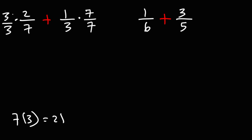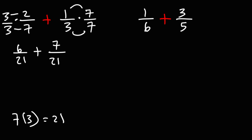Now let's multiply across. 3 times 2 is 6, and 3 times 7 is 21. Here we have 1 times 7, which is 7, and 3 times 7 is 21. 6 plus 7 is 13, so the answer is going to be 13 over 21.